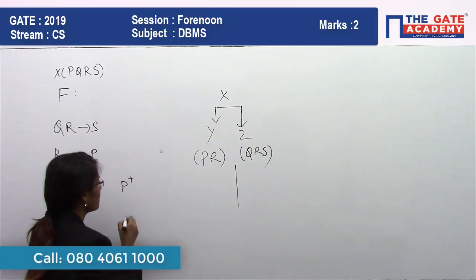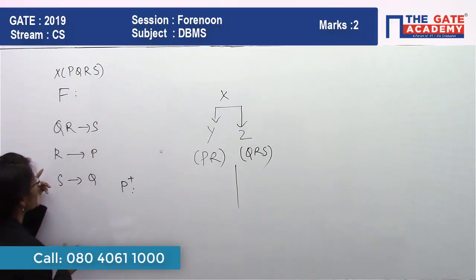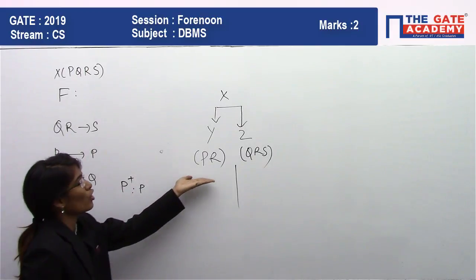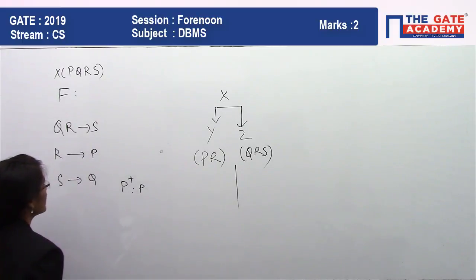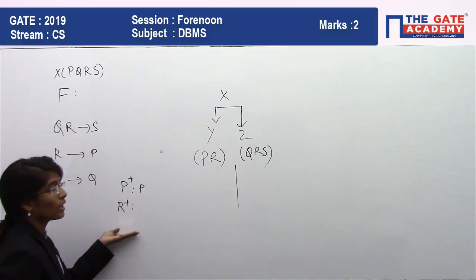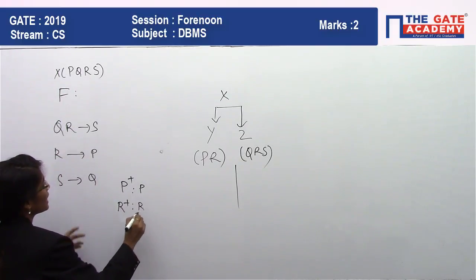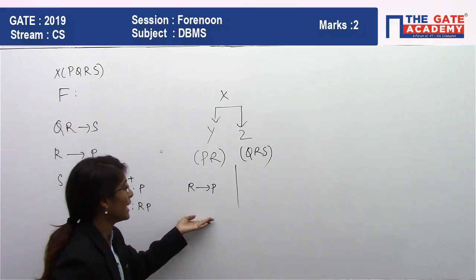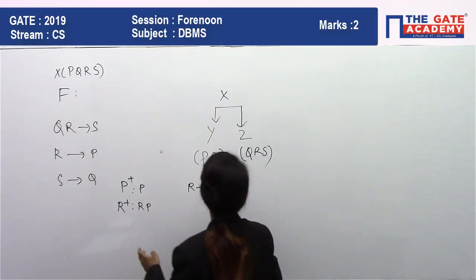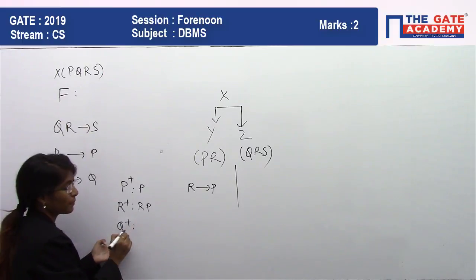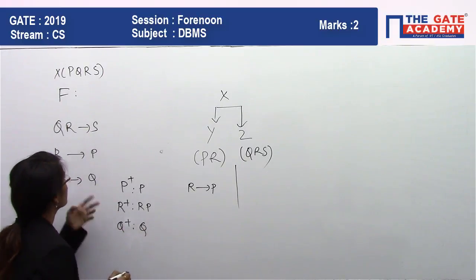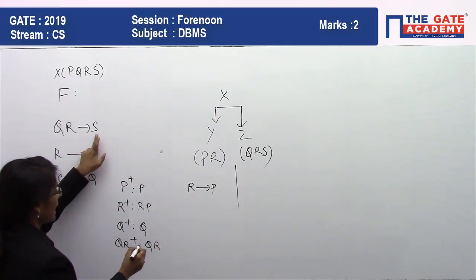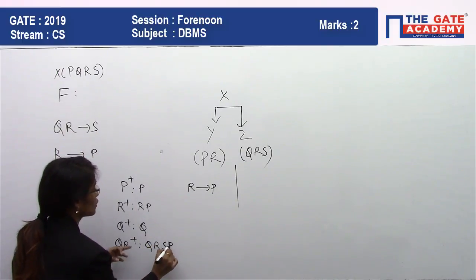We compute attribute closures using the given functional dependencies. Closure of P is {P} only — trivial. Closure of R: R → P, so R⁺ = {R, P}. Closure of Q is {Q} only. Closure of QR: QR → S, and R → P, so QR⁺ = {Q, R, S, P}.